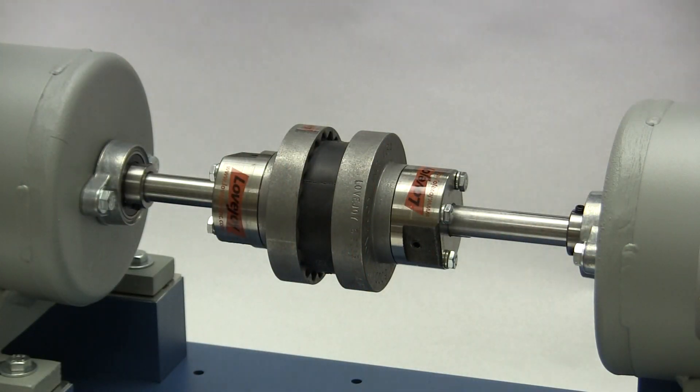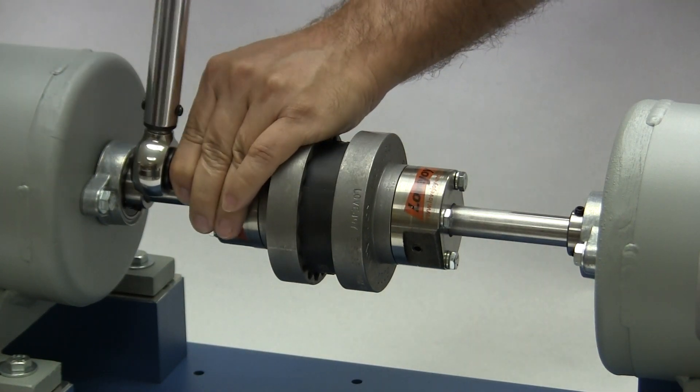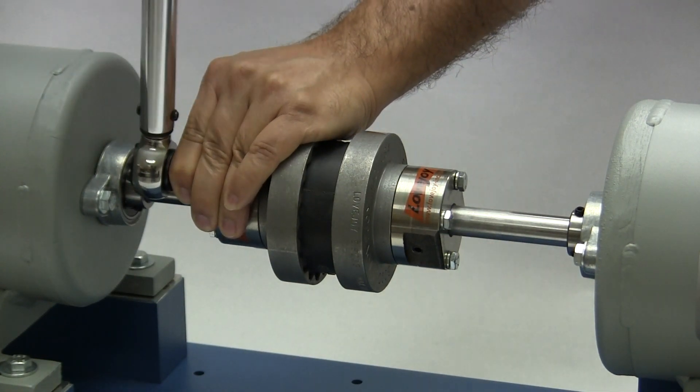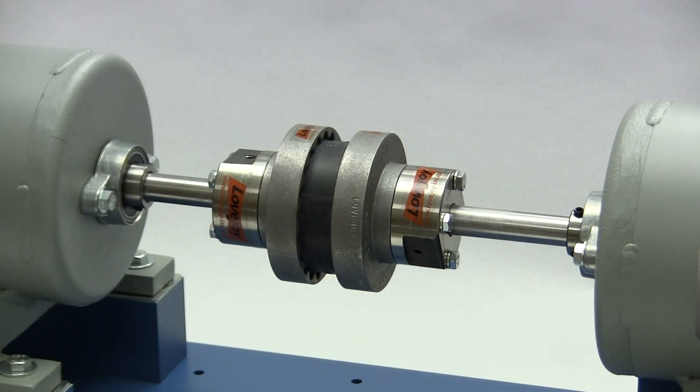Each spacer bolt should be tightened evenly using the industry standard procedure. With a calibrated torque wrench, tighten each bolt first to 50% of the specified torque, then 75%, then to the final torque as specified in the installation guide.